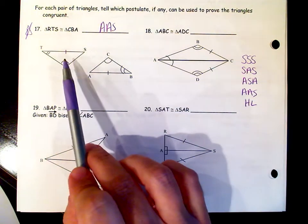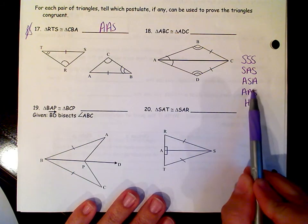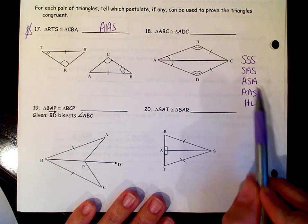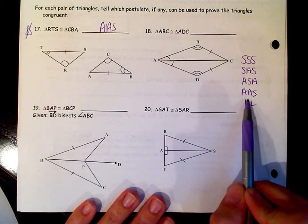The side on number 17 is not between the two angles. It's not the side that's connecting the vertices together, therefore it's going to be angle, angle, side.